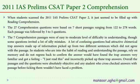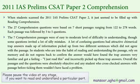Now let's analyze the 2011 IAS Prelims CSET Paper 2 comprehension section questions. The 27 comprehension questions were based on 7 short passages ranging from 122 to 278 words. Each passage was followed by 3 to 5 questions. Because passages occupy a lot of space, when students scanned the 2011 IAS Prelims CSET Paper 2, it just seemed to be filled up with reading comprehension. The 7 comprehension passages were of easy to moderate level of difficulty, though some questions invited a lot of silly mistakes.